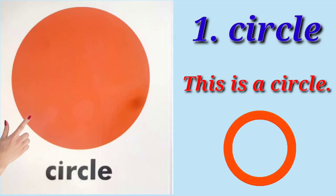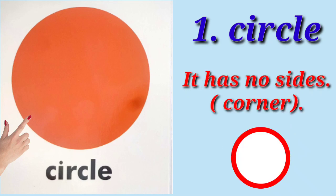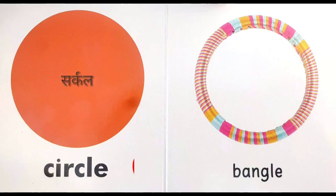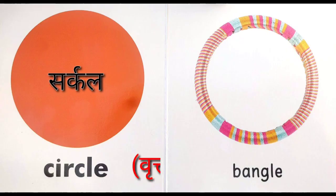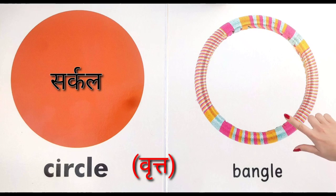Circle. This is a circle. It has no sides. Circle has no corners. Circle means breadth. The shape of the bangle is like a circle.